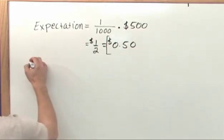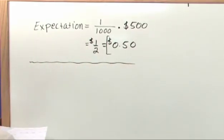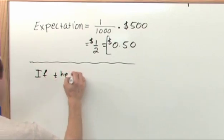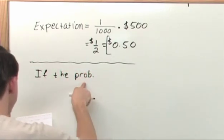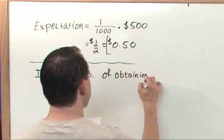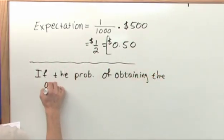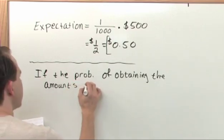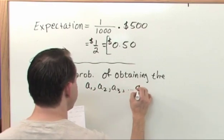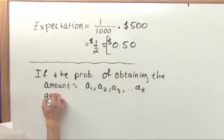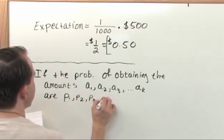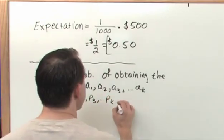And that's all it is. So this leads you to the definition of mathematical expectation that you'll just see in your book, and basically it goes like this. It says, if the probabilities of obtaining the amounts A1, I'll explain this in a minute, A2, A3, dot dot dot, up to AK are equal to P1, P2, P3, dot dot dot, PK. Then the...